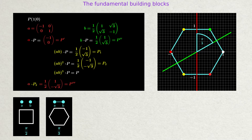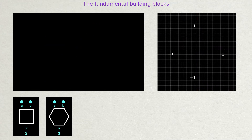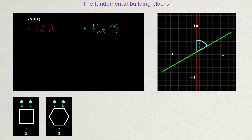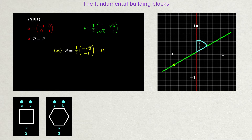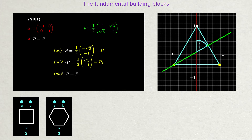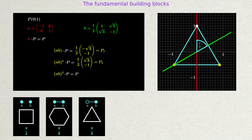This setup of mirror lines allows for a slight variation. How do the reflection images change if the initial point P is located on one of the mirror lines? The red line is now inactive — it doesn't generate a new image point. Instead, P is reflected onto itself. The combined action of the mirror line still rotates this point by 120 degrees. In total, three points appear that can be connected to a regular triangle. The corresponding Coxeter-Dynkin diagram is similar to the previous one, only the inactive mirror is shown by an unfilled circle.